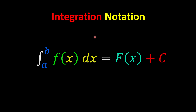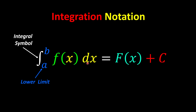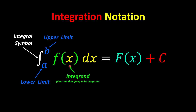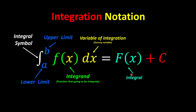Integration is just the reverse of differentiation — we increase the power by one and divide by the new power. Now let's learn about integration notation. When we want to integrate something, we use this curved S-sign, called the integral symbol. The a and b are the limits of our variable — a is the lower limit and b is the upper limit, which we'll learn later. The function we're integrating is written in green, and dx tells us which variable we're integrating with respect to — this is called the dummy variable. The result is big F, and C is our constant of integration.